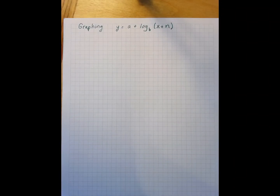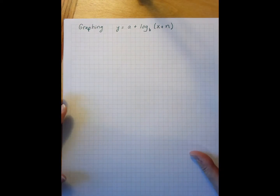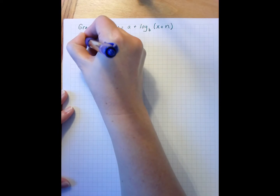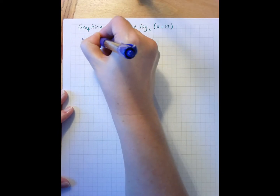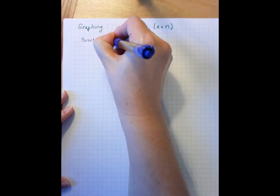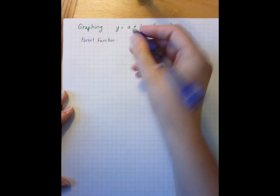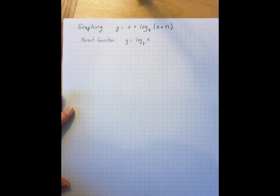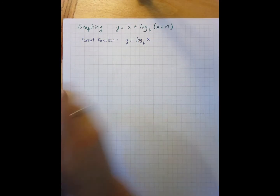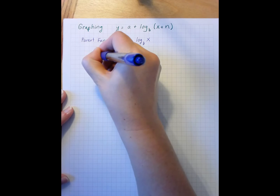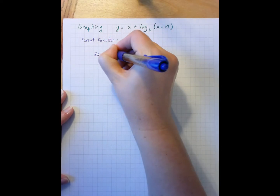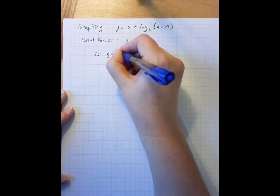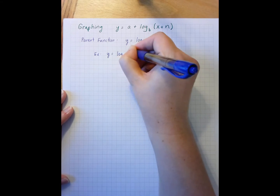In class you've been exploring graphing logarithmic functions. I am going to start by graphing the parent function. The parent function for a logarithmic function is y equals log base b of x. Let's look at an example. So if I have y equals log base 5 of x.